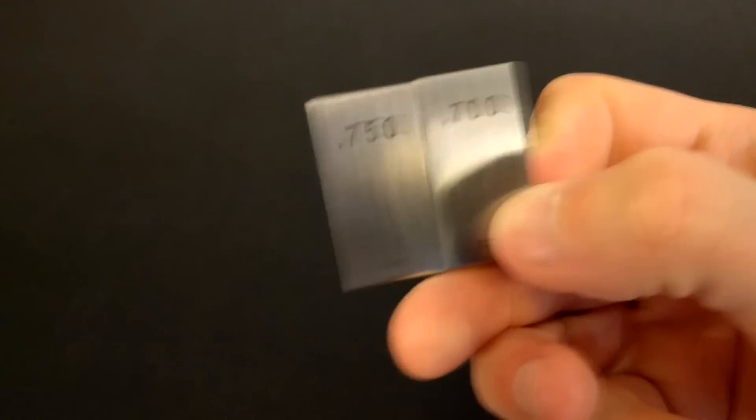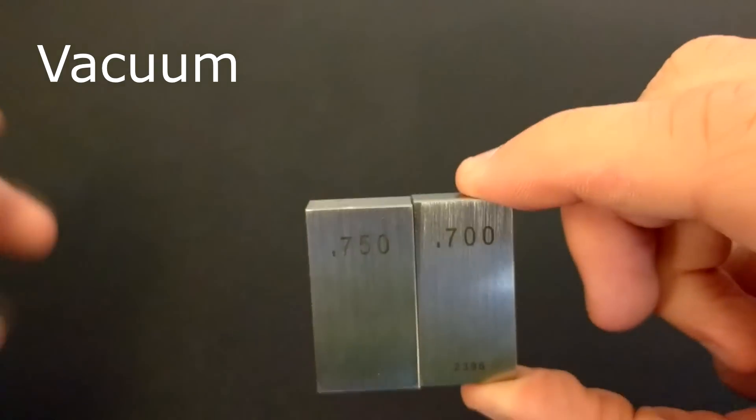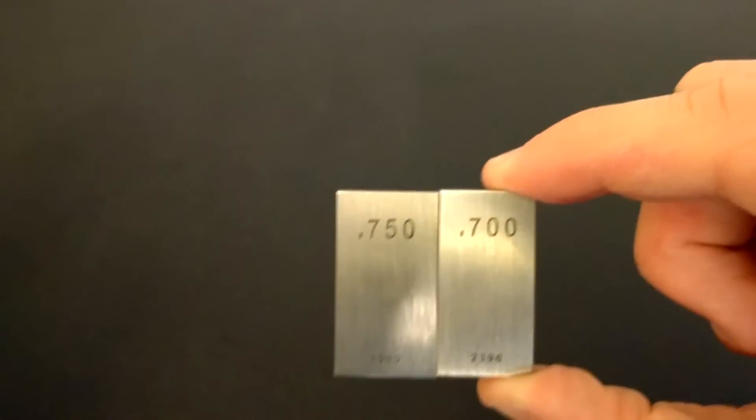Gauge block wringing has been shown to work in a vacuum with clean blocks and that is evidence that this is actually a factor. It's pretty cool that the molecules are so close together that it makes it hard to pull these blocks apart.